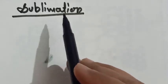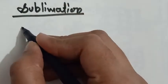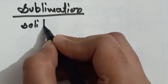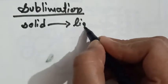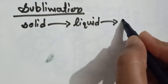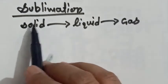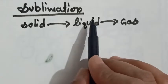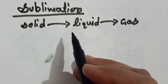Hello students. In this video I'm going to start the explanation of sublimation. We know that when we provide heat to a solid it changes into liquid, and when we provide heat to this liquid it changes into gas. This process is known as melting, and this process is known as boiling.